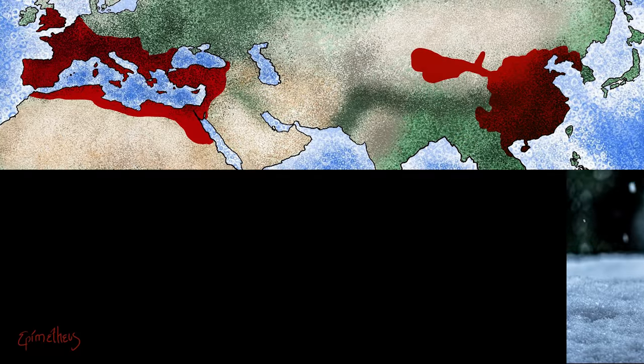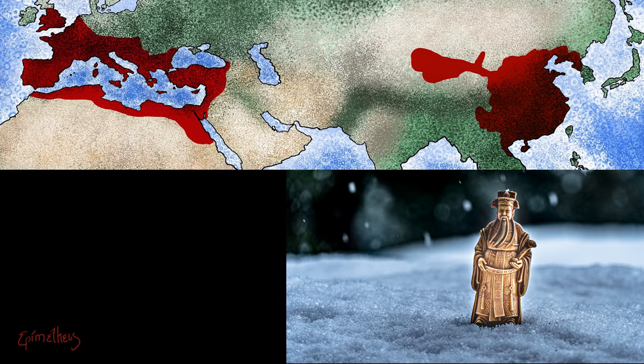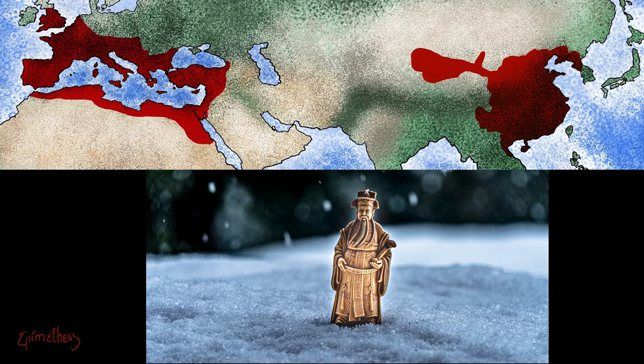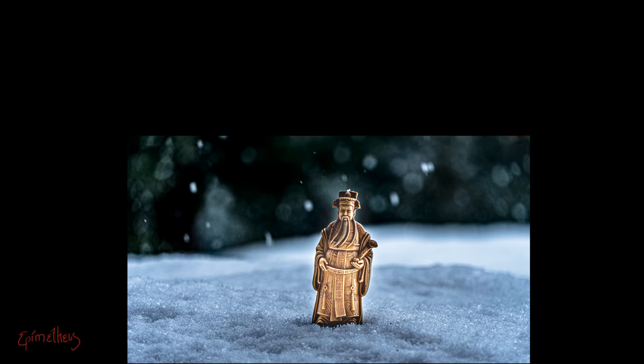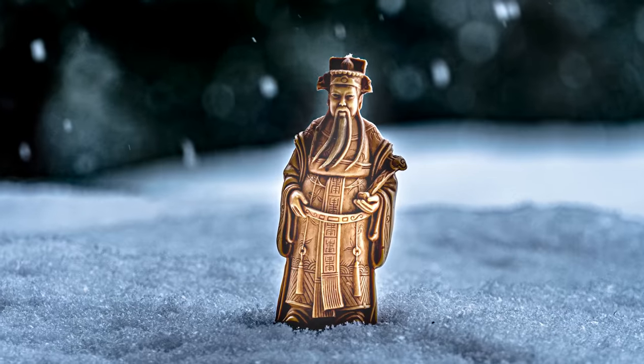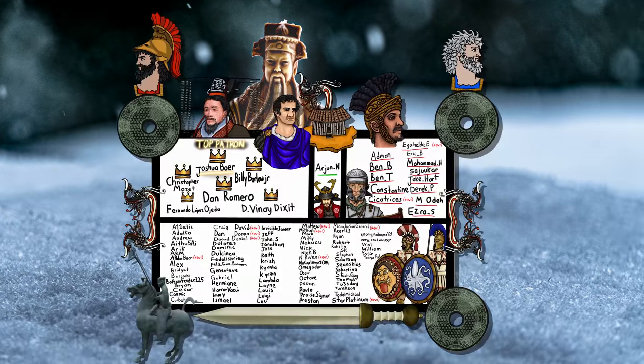So out of the mechanisms for preserving power that these empires used, which was the most and least effective? Let me know down in the comments — it will be really interesting to see what you have to say. This has been Epimetheus. The biggest of thanks to my patrons who support making videos like this, and to you, awesome person who made it to the end of the video.